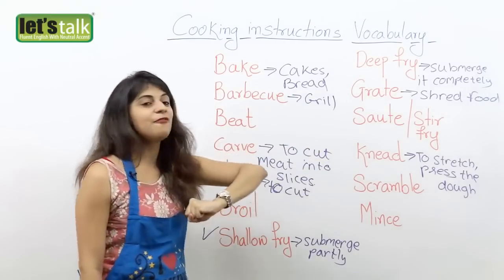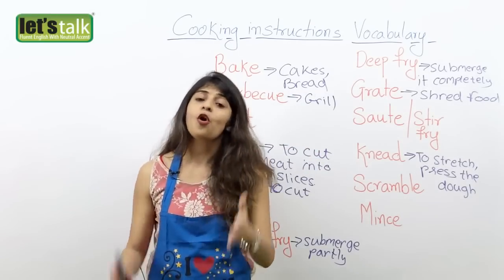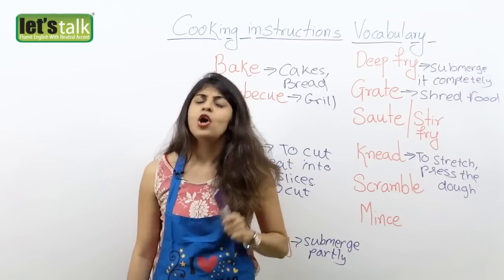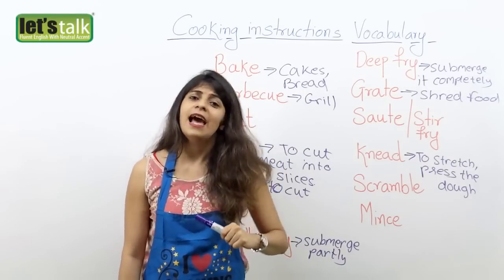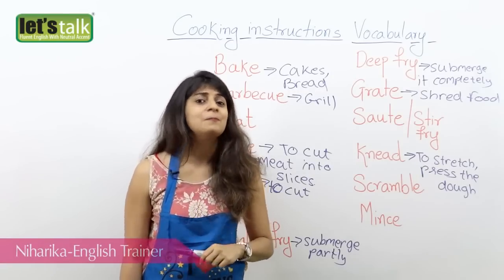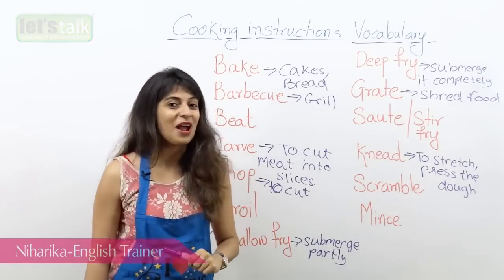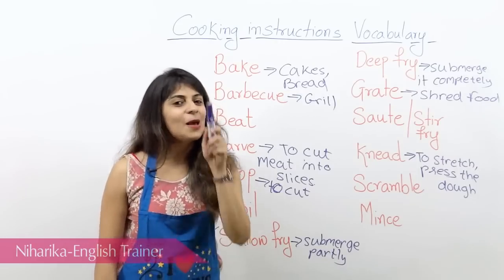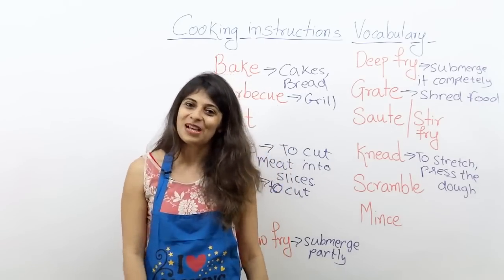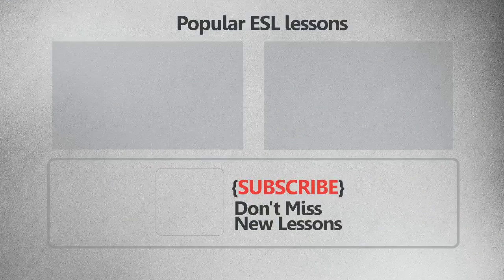So these are some verbs that would help you to give or take cooking instructions. So the next time your sister calls and says, hey, you cooked extremely good chicken — could you please help me with the recipe? Well, now you know what are the right words to use. I'll be back with a new lesson. Right now I'm starving and I'm gonna go cook some good meal for myself. Bye!